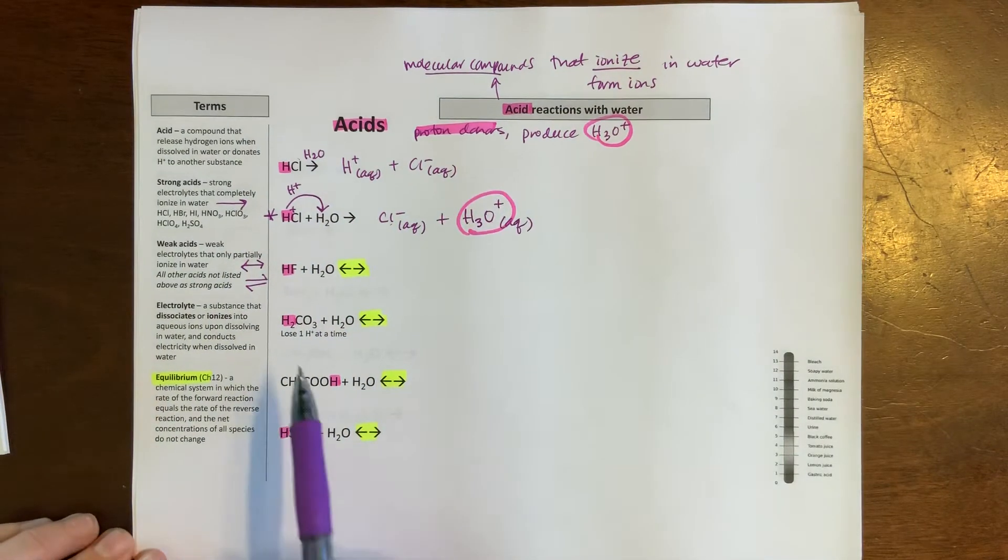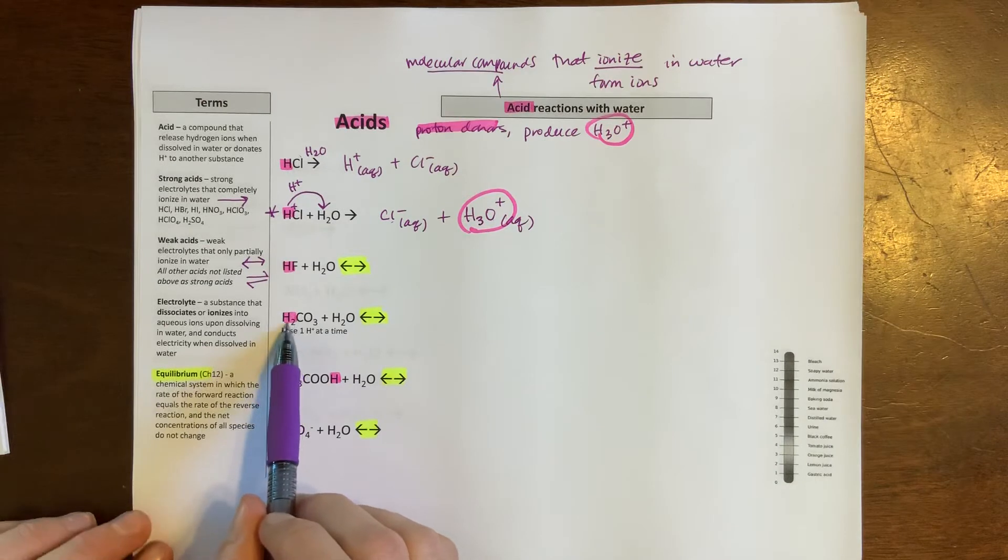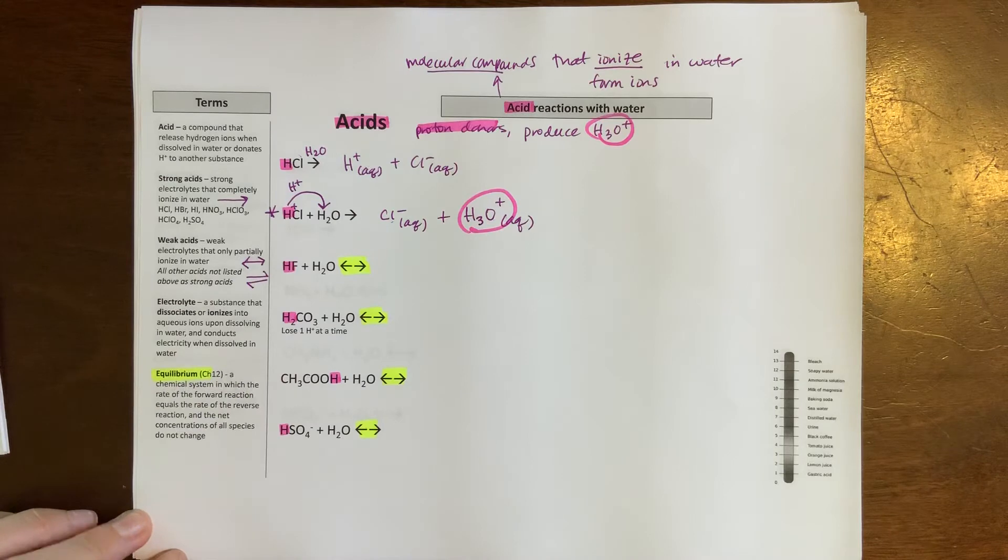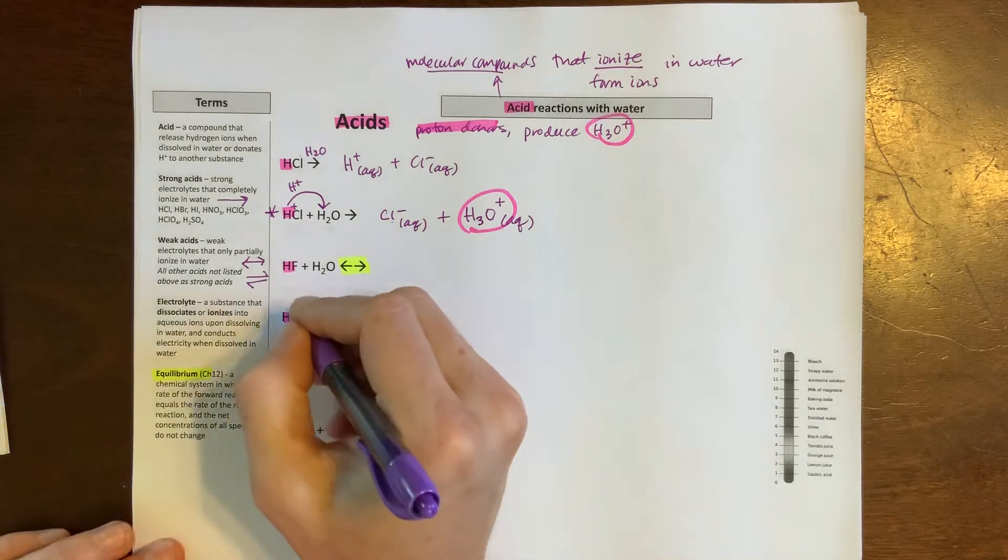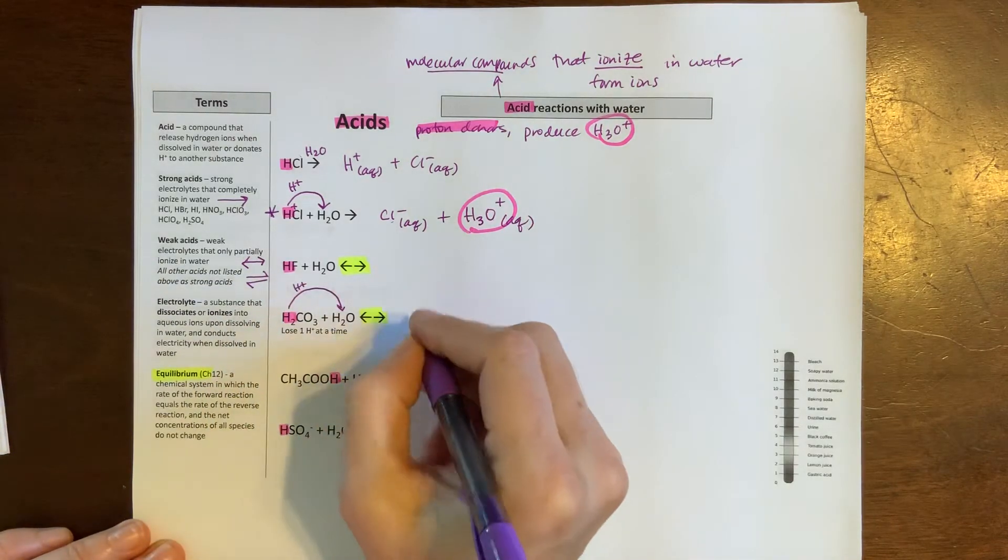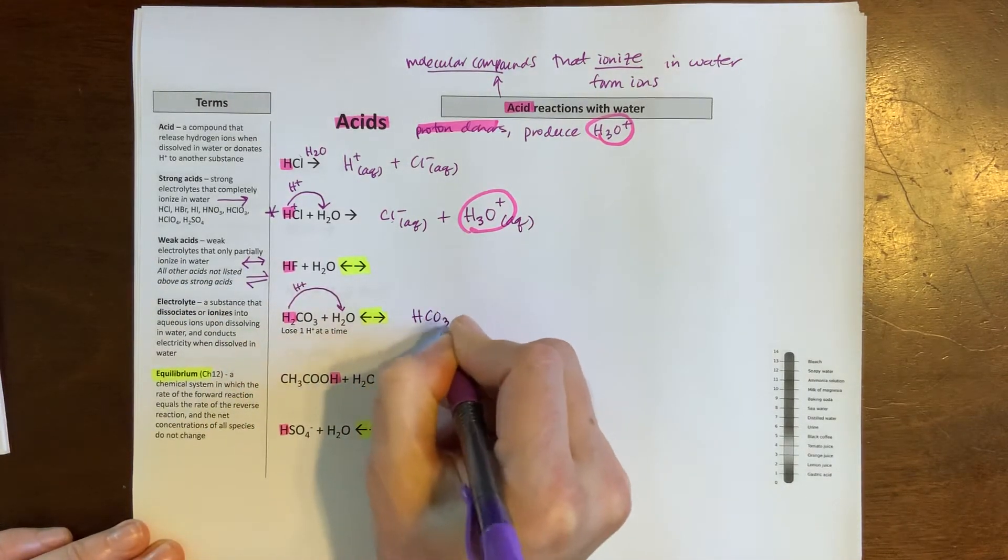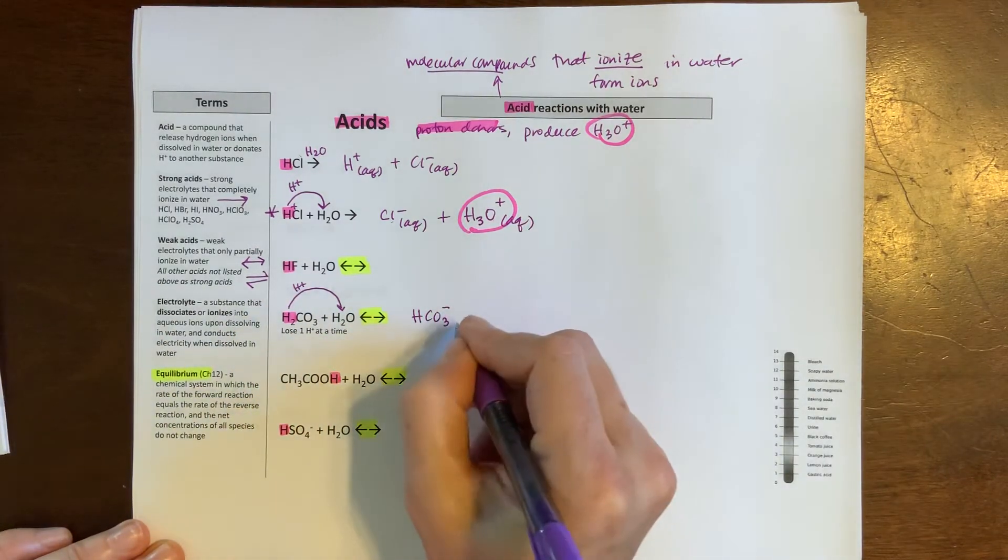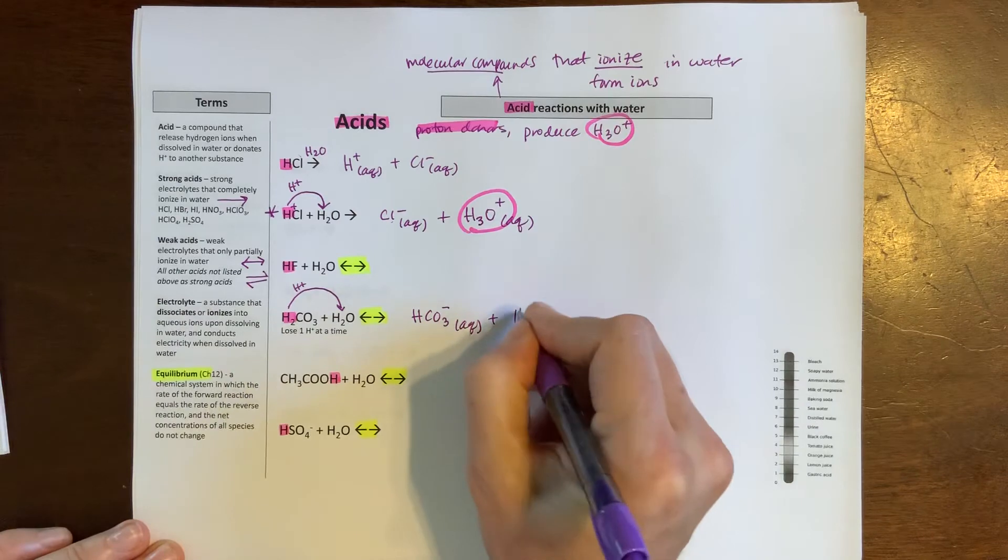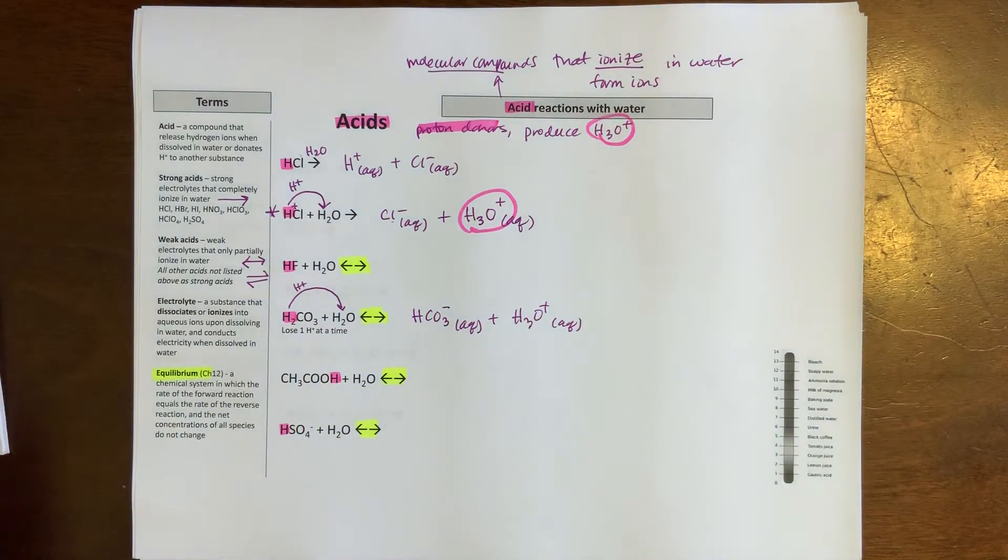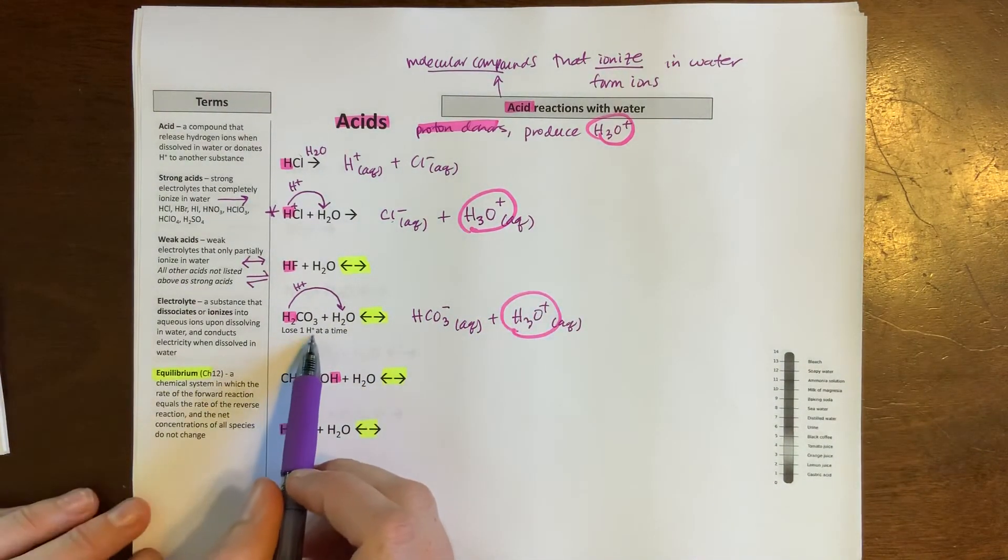So let's take a look here at the carbonic acid with water. Notice when I have more than one hydrogen, what actually happens is that I lose one hydrogen at a time. So proton donor, I'm going to send an H+ over, but just one at a time. So if I lose one H+, I have HCO3- because I lost a positive—what's left behind is negative. This would be aqueous, and then I have H3O+ aqueous. Again, it was an acid and I should get a hydronium at the end. So just losing one proton at a time.